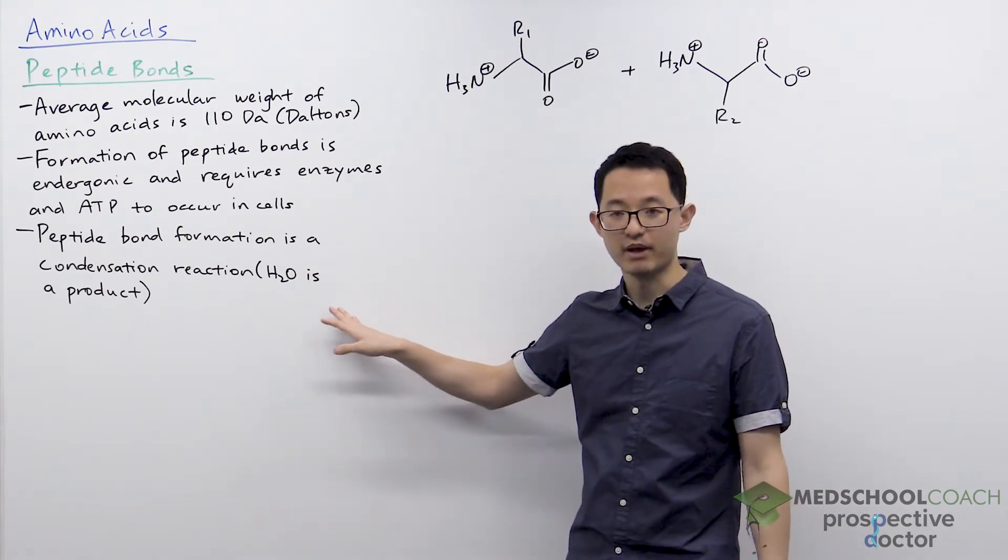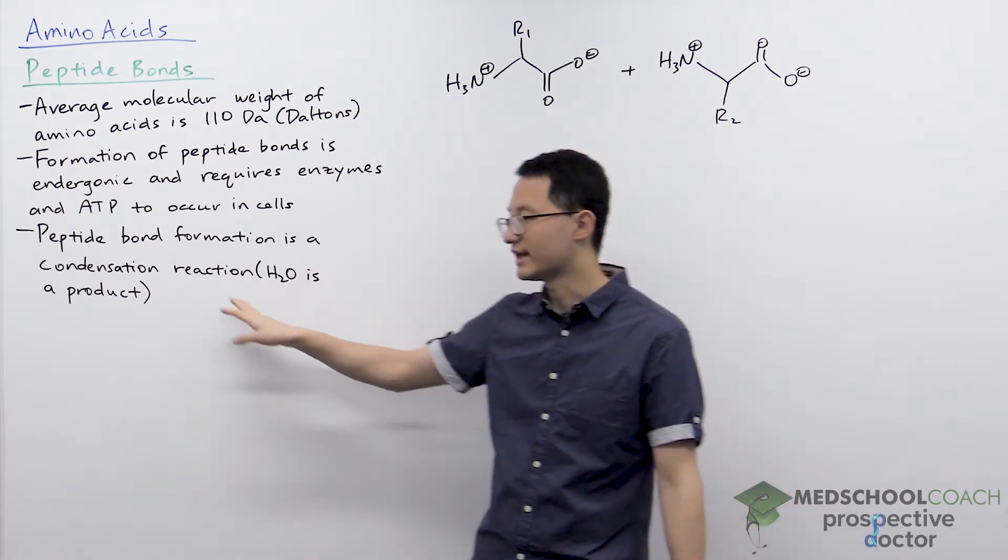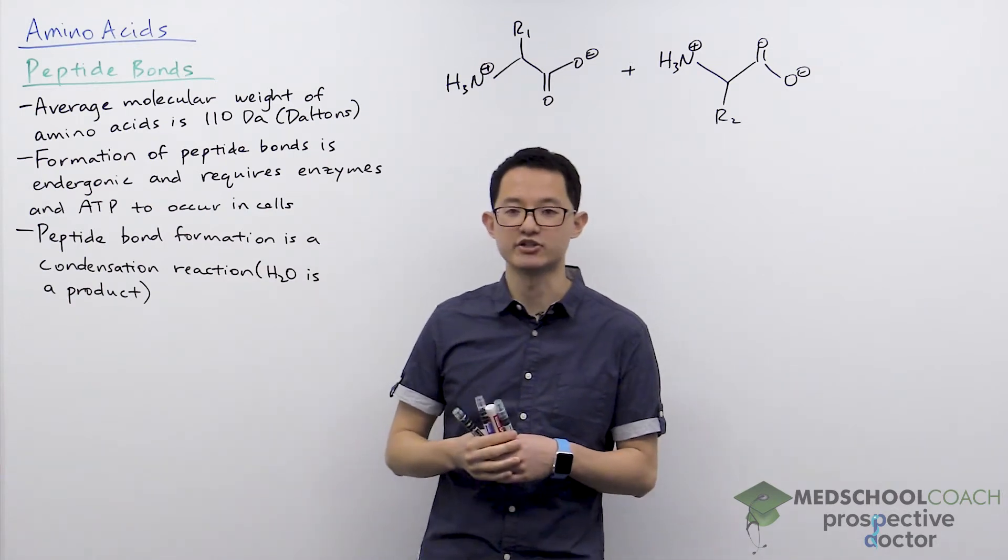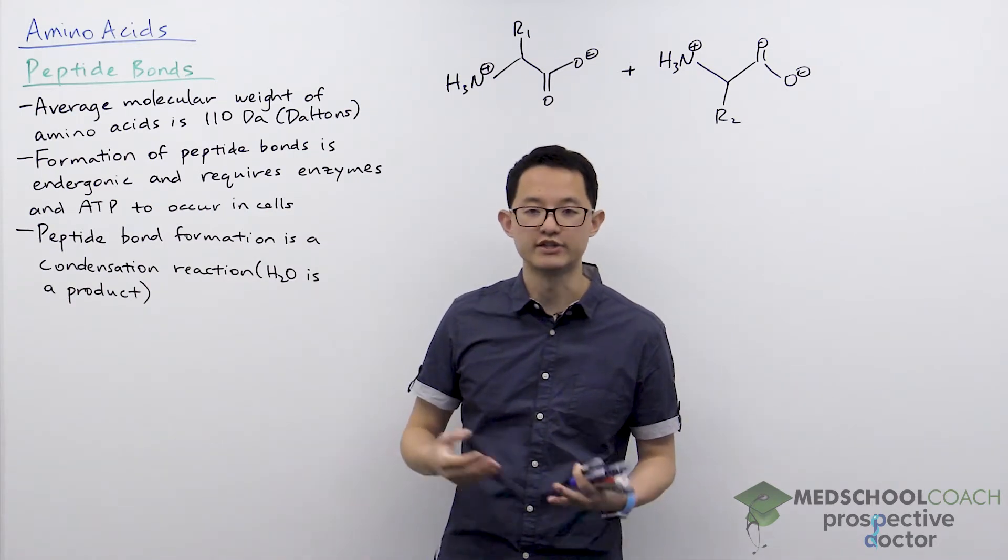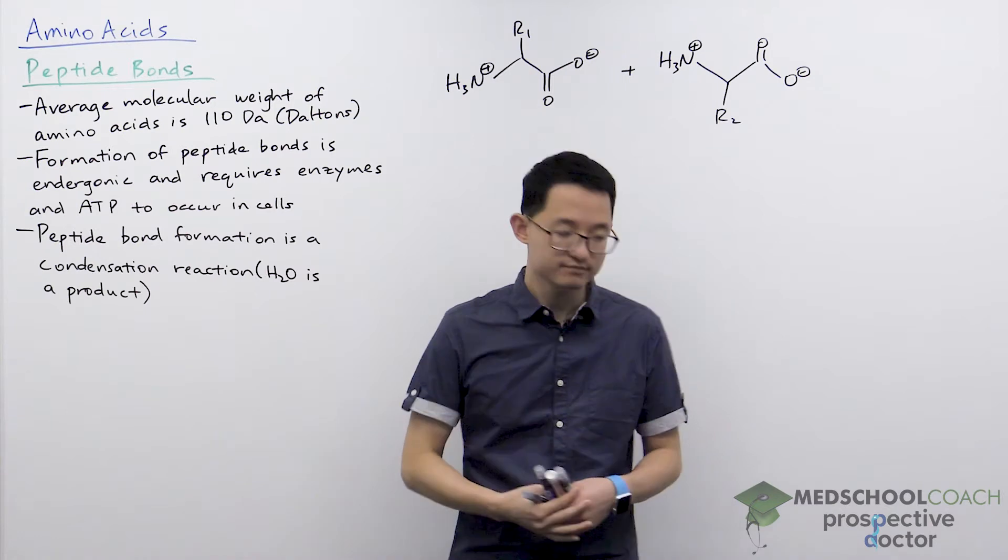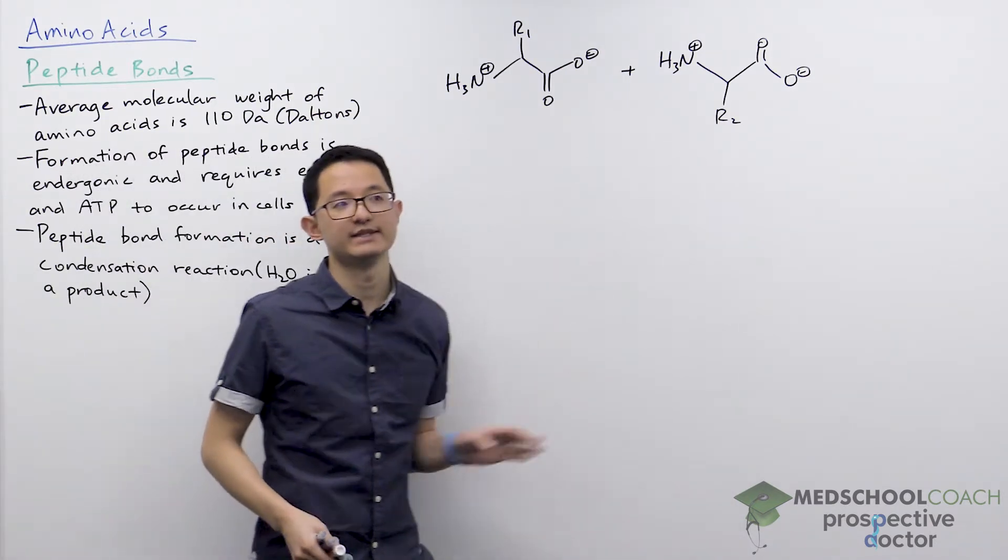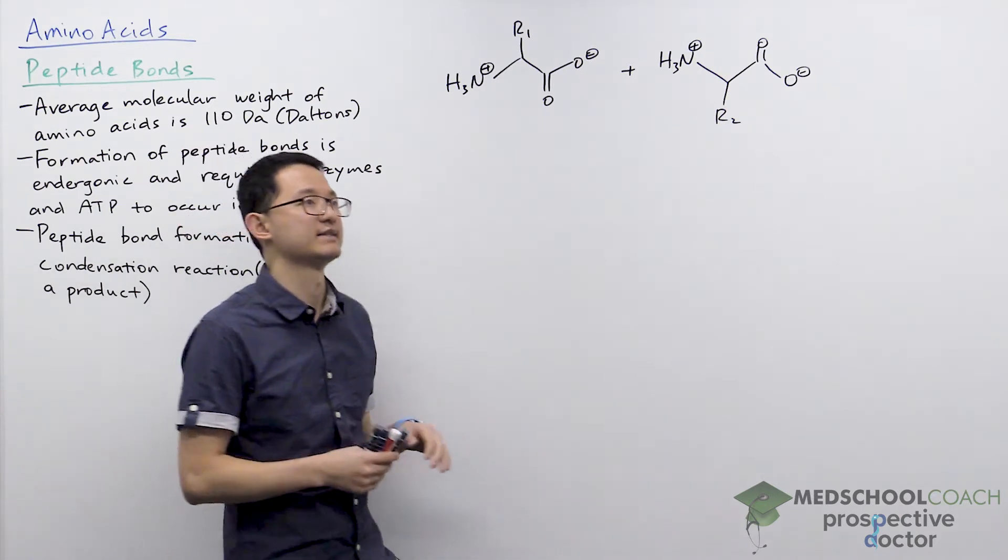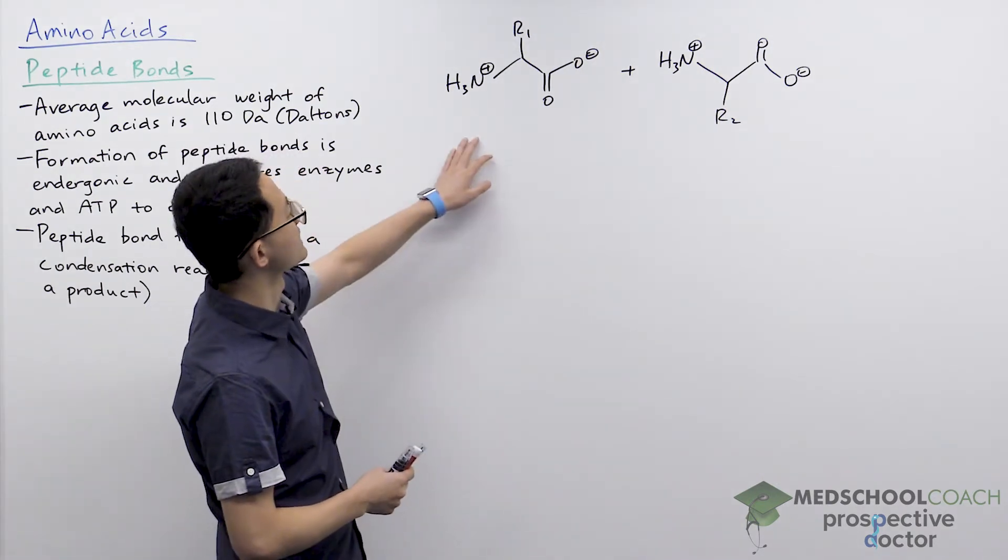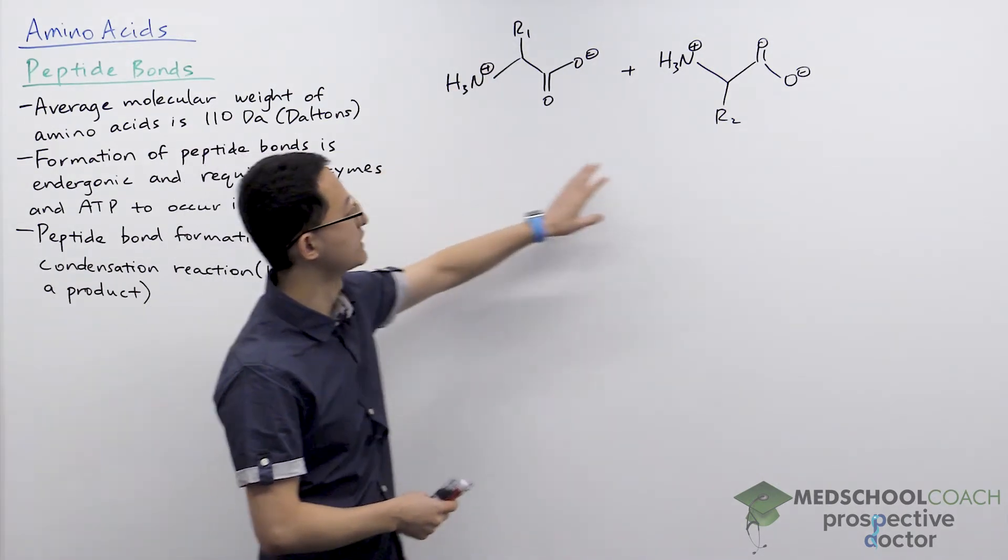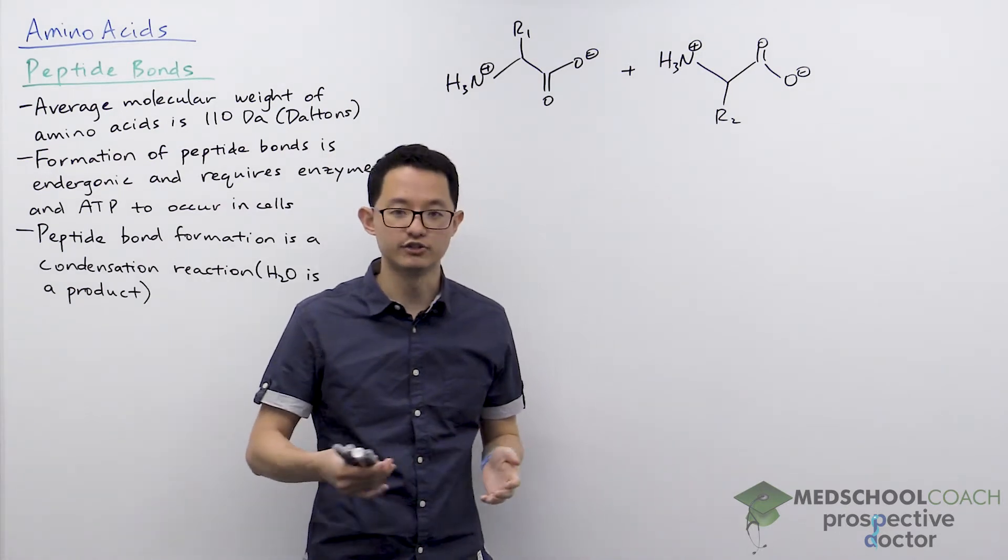Finally, another important point about peptide bond formation is to know that it's a type of condensation reaction, meaning that water is going to be formed as a product. So let's take a look. Here I've got two different amino acids - I haven't specified what amino acids they are, just that one has a side chain of R1, the other one has a side chain of R2.